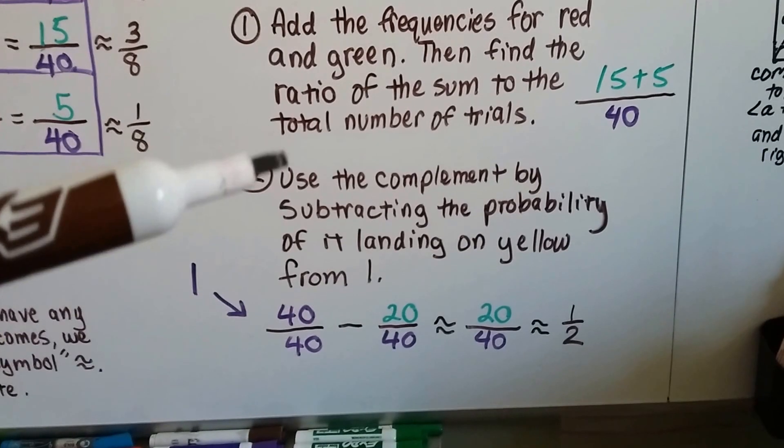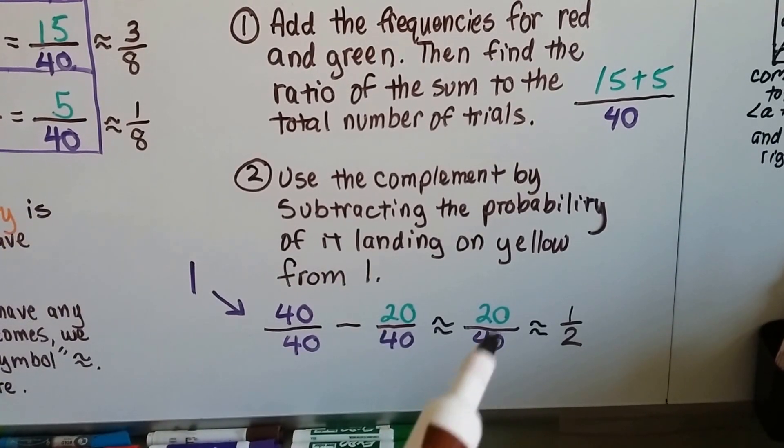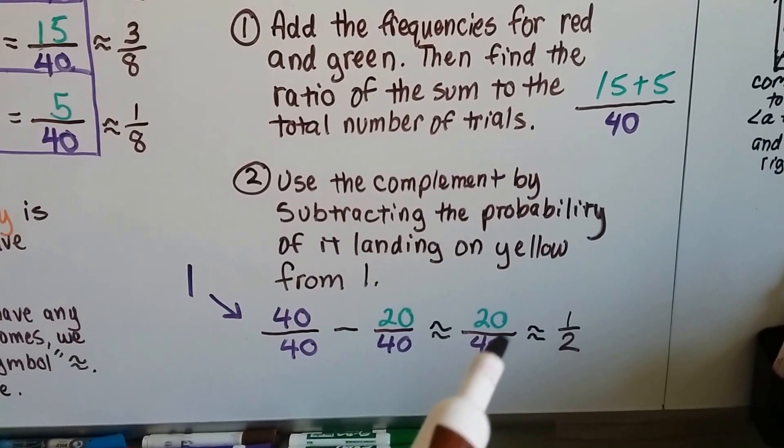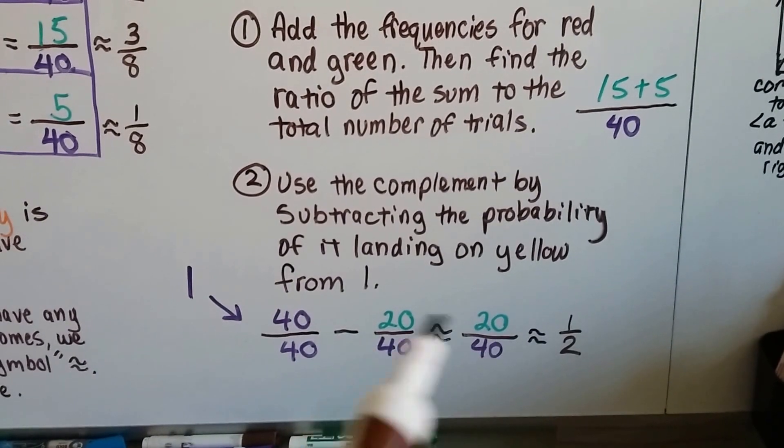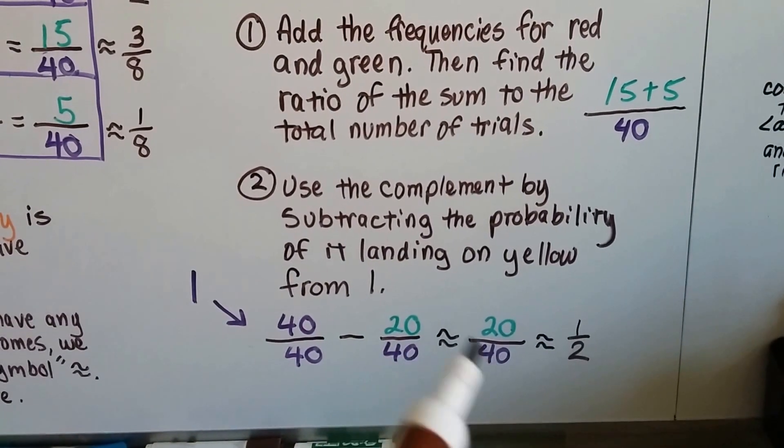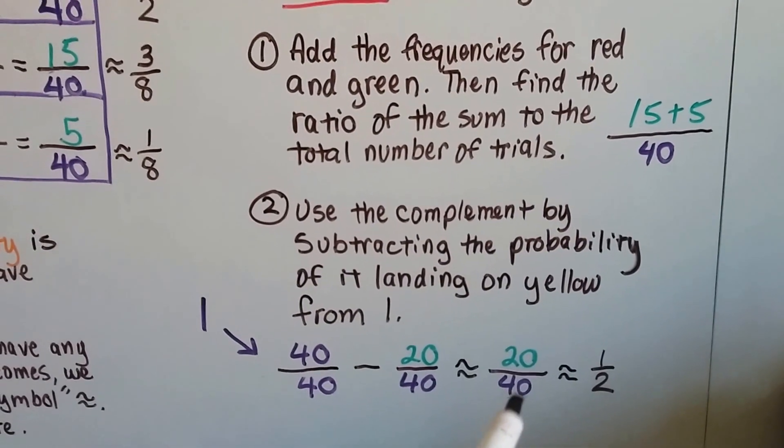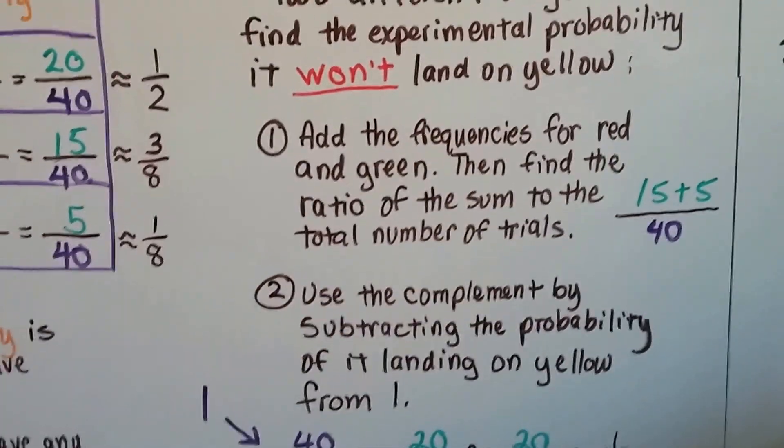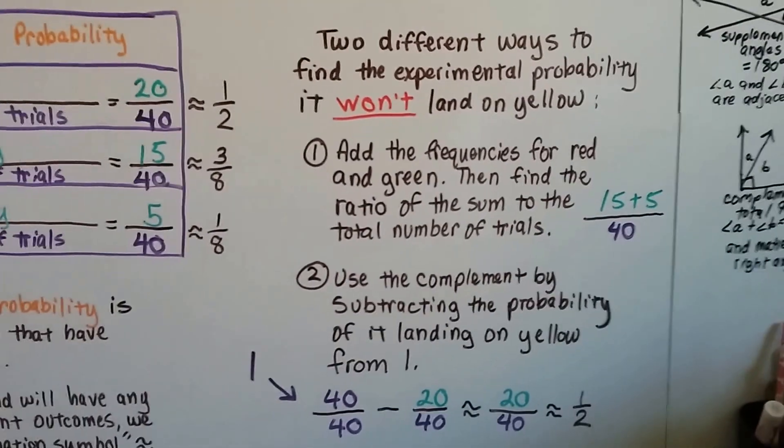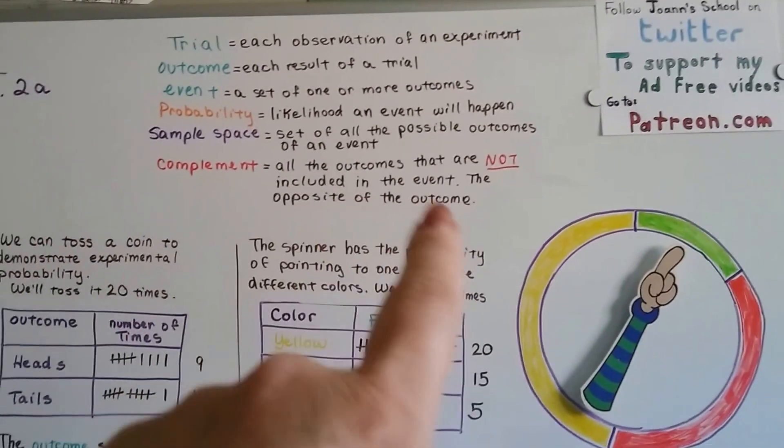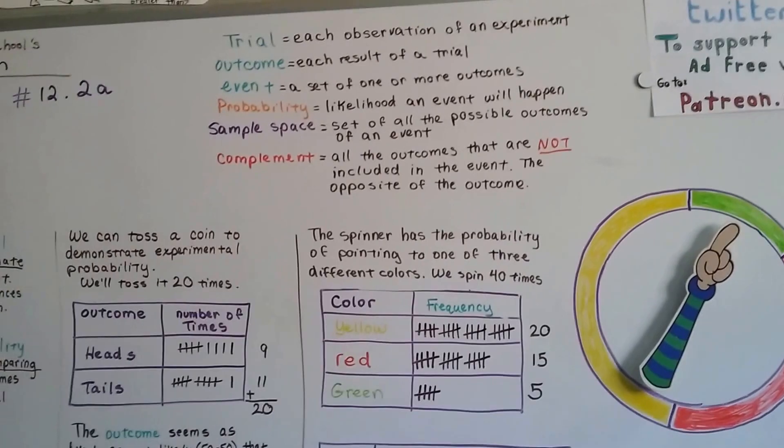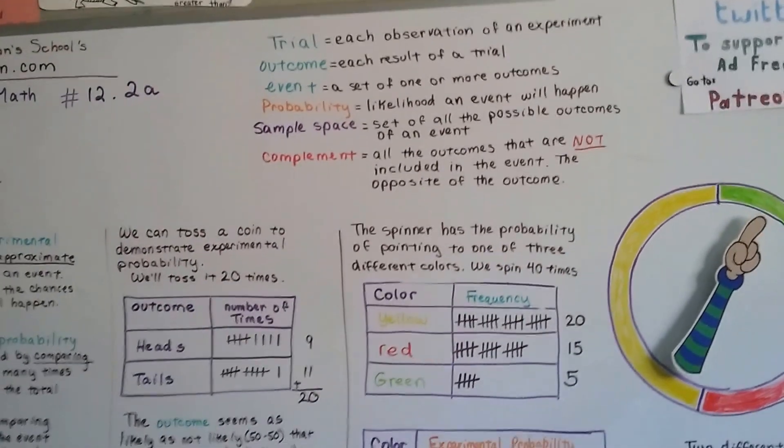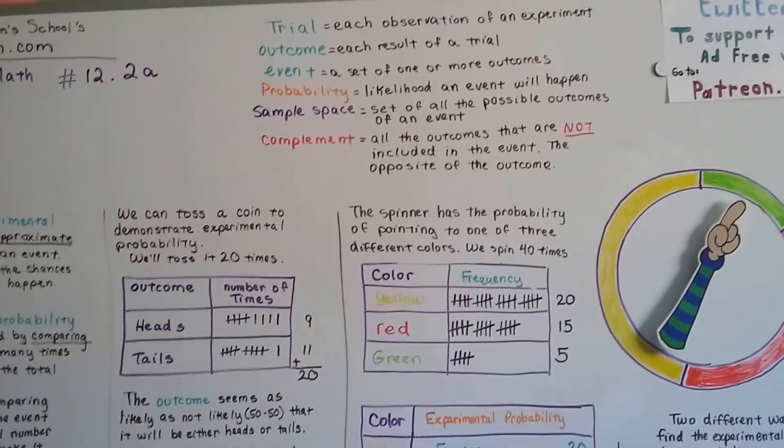We also could have used the complement by subtracting the probability that it landed on yellow from 1. So 40 over 40 is 1, because the numerator and denominator are the same. So we subtract the 20 over 40 that it did land on yellow, and we get 20 over 40 that it wouldn't. Half. So if we use the complement, the complement is the opposite of what did happen, right? The complement is the chance of it not landing on yellow. It's the chance of it landing on red or green. So if you remember that from before, it's all the outcomes that are not included in the event, the opposite. So if we're looking for yellow, it would have been the red and green.